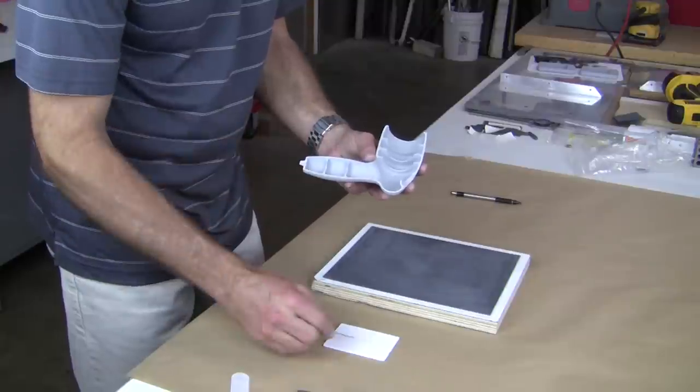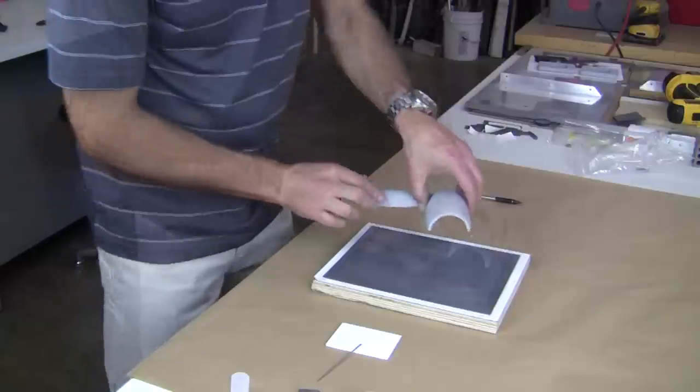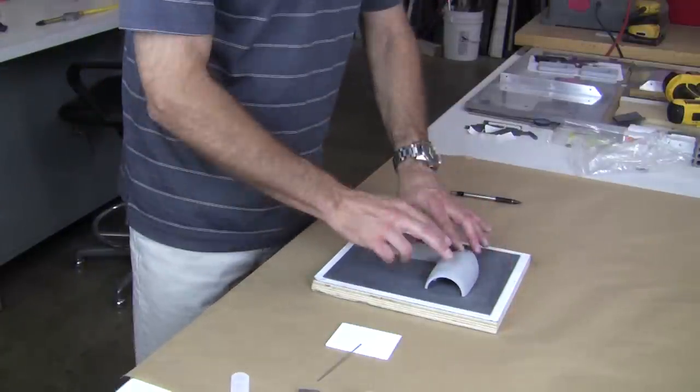Once the glue is applied, we carefully set the pattern down onto the splitter board using our traced outline as a guide.